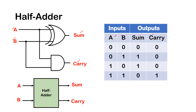When A is 0 and B is 0, the sum is 0 and there is no carry, so carry is 0. For the next combination, A is 0 and B is 1. We add them up and we get a sum of 1, and there's no carry, so carry is 0.